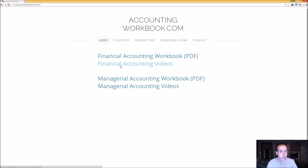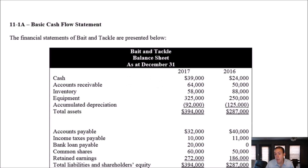Let's begin our problem. Let's have a look at problem 11-1A, a basic cash flow statement problem. It says the financial statements of Bait and Tackle are presented below, and there are some financial statements.